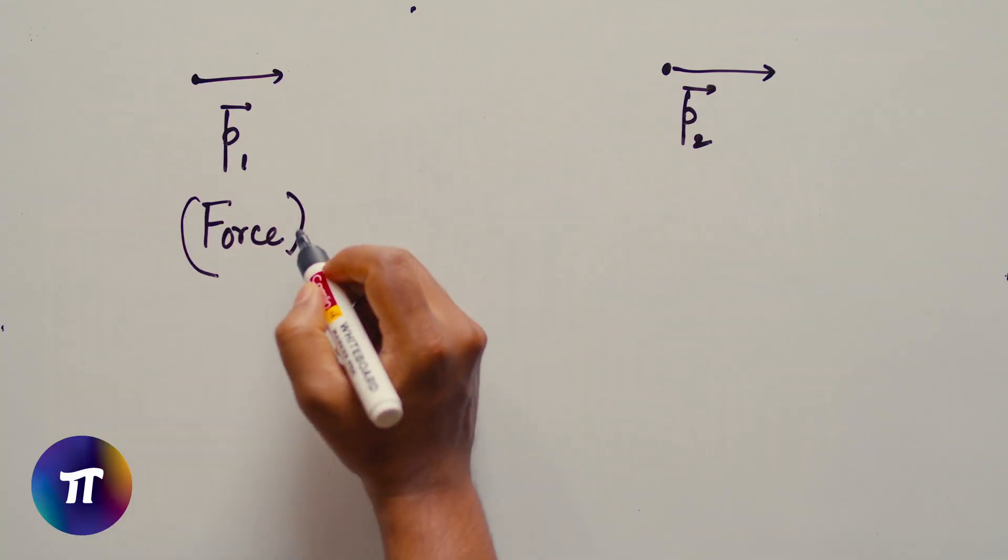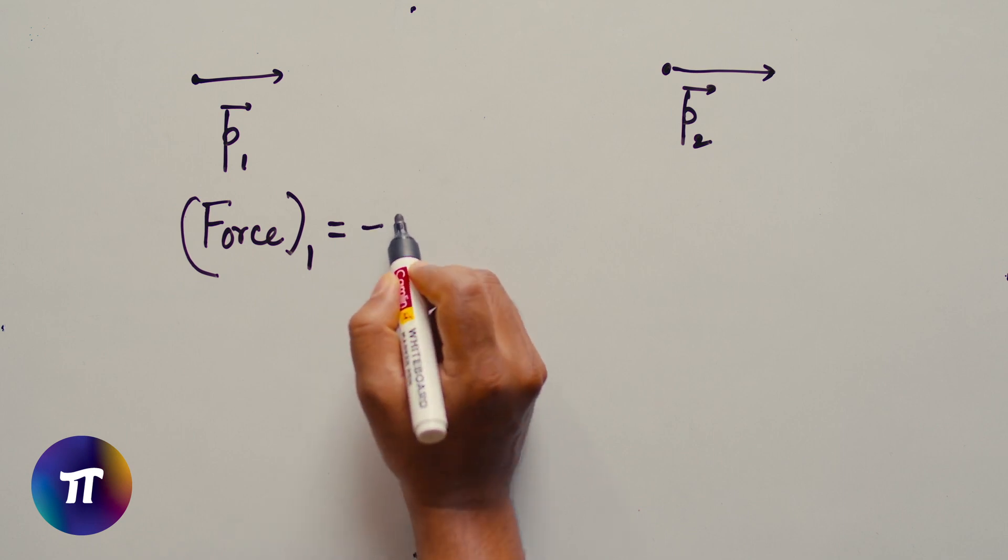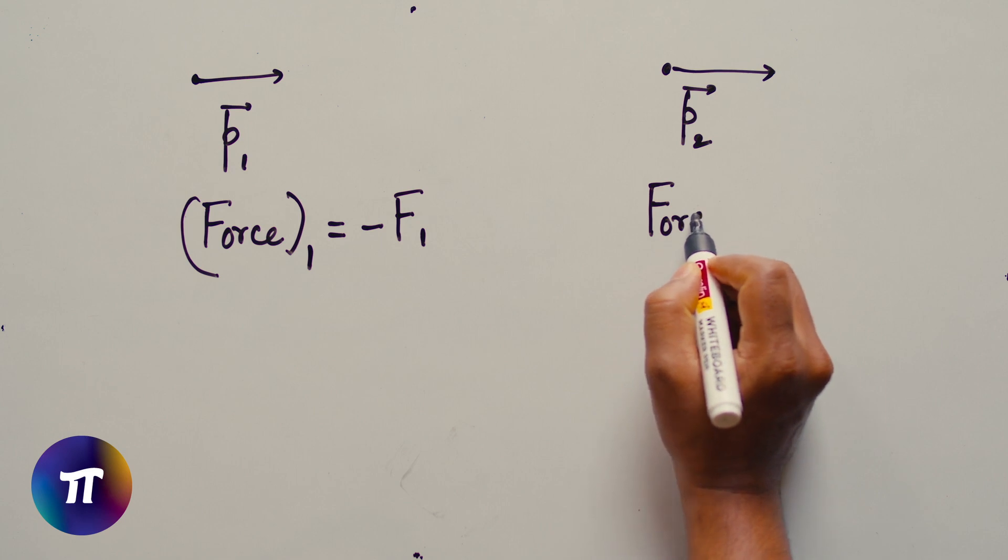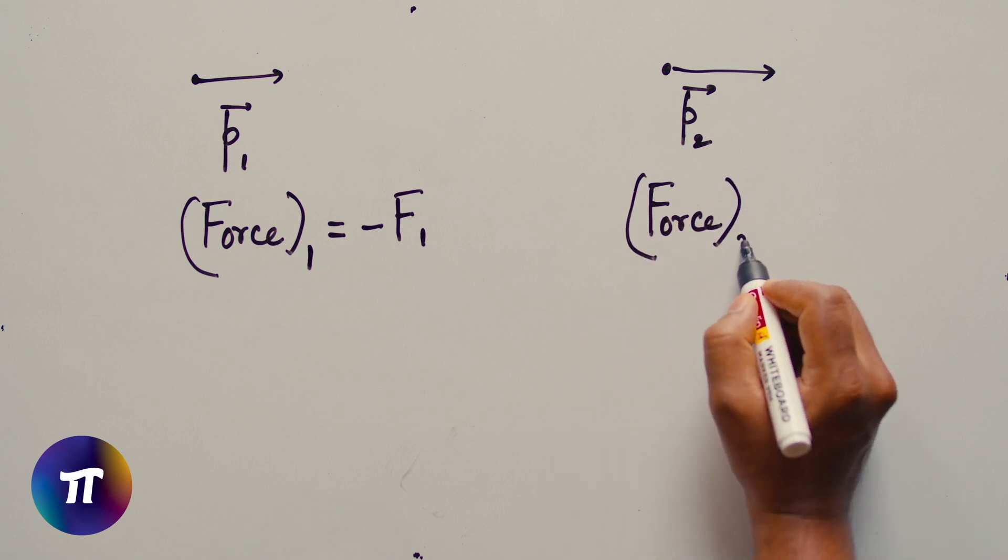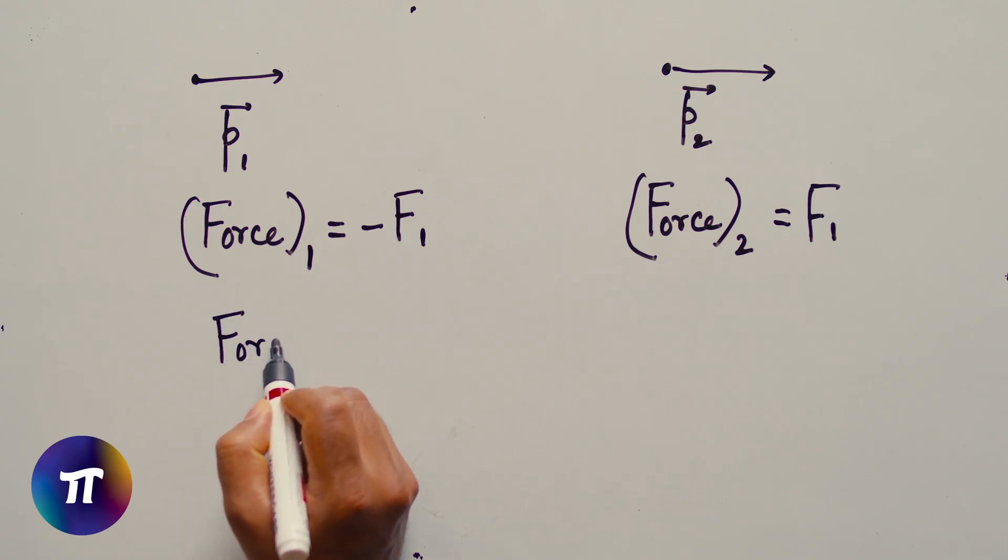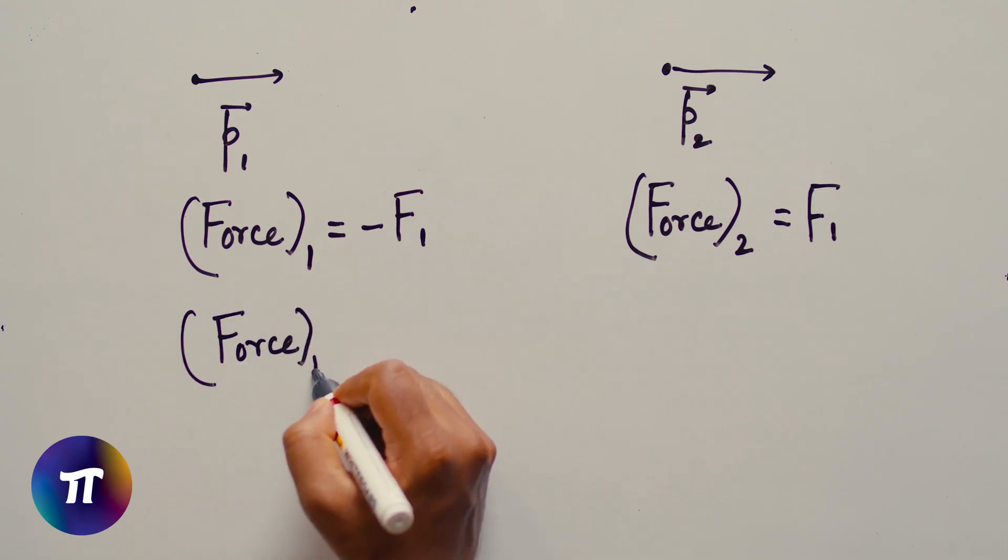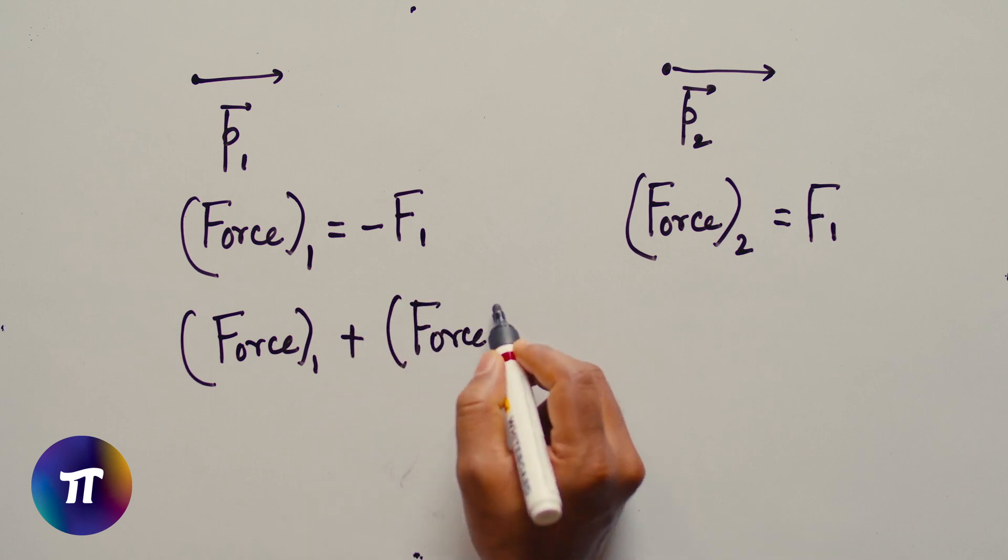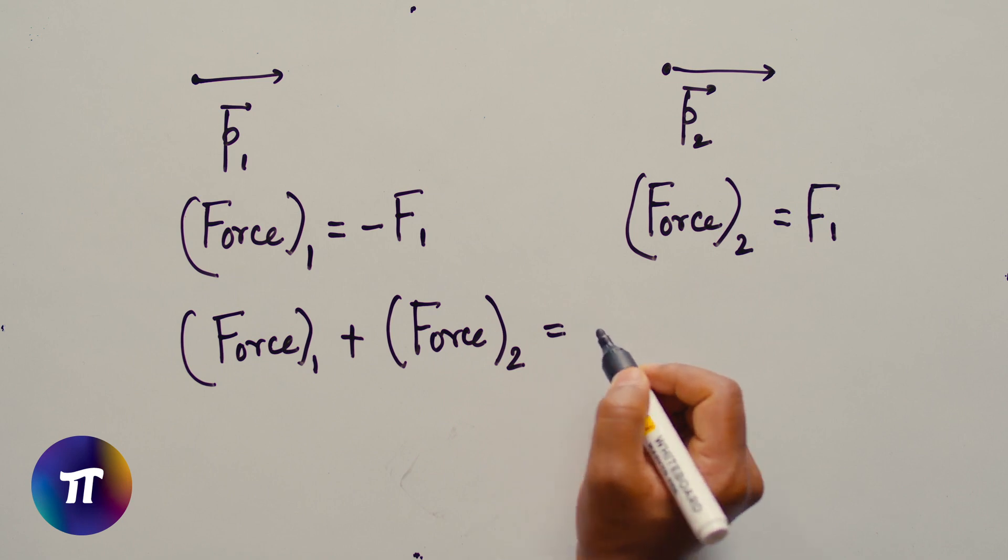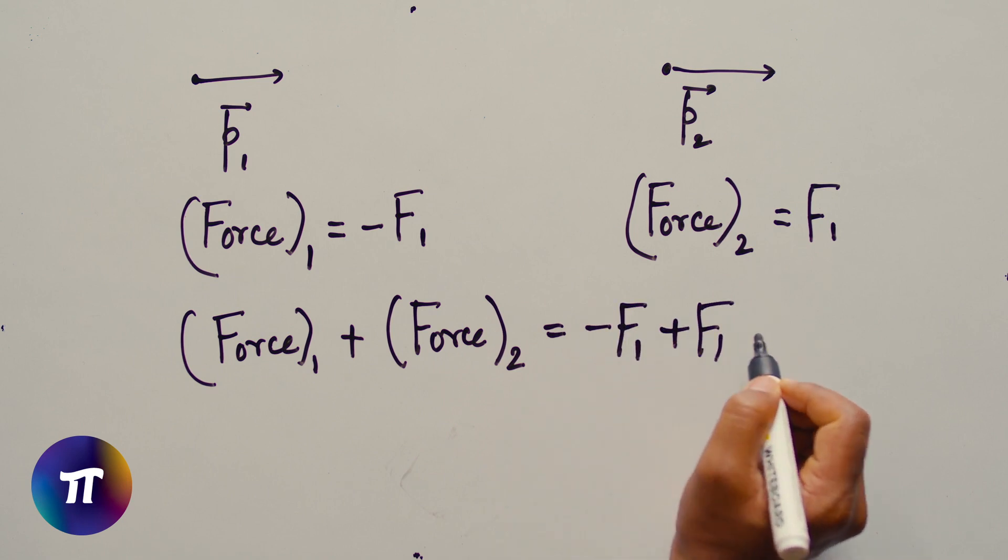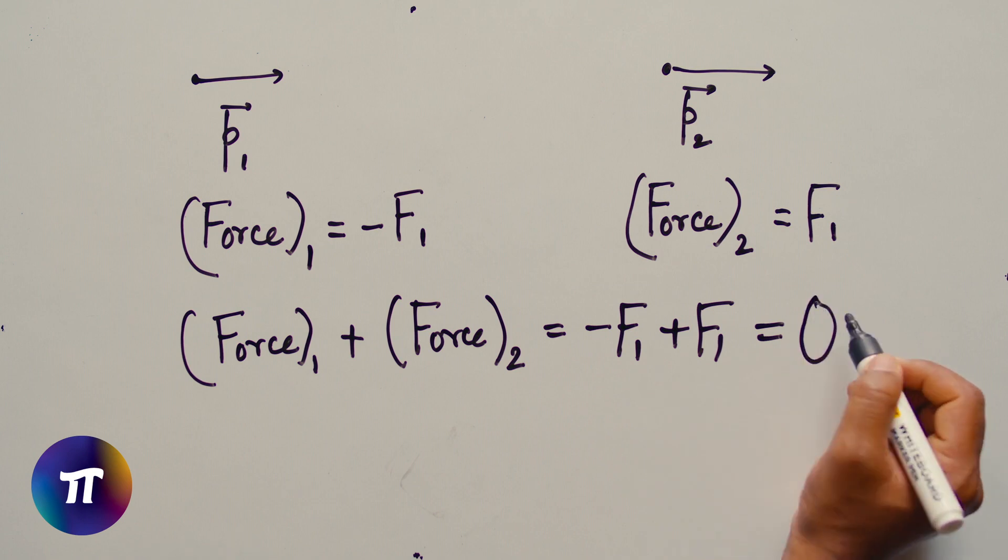So what is the change of momentum? The rate of change of momentum for the first particle is force 1 equals minus f1. The rate of change in momentum of the second particle is force 2 equals f1. So the net change of momentum is force 1 plus force 2 equals minus f1 plus f1 equals 0.